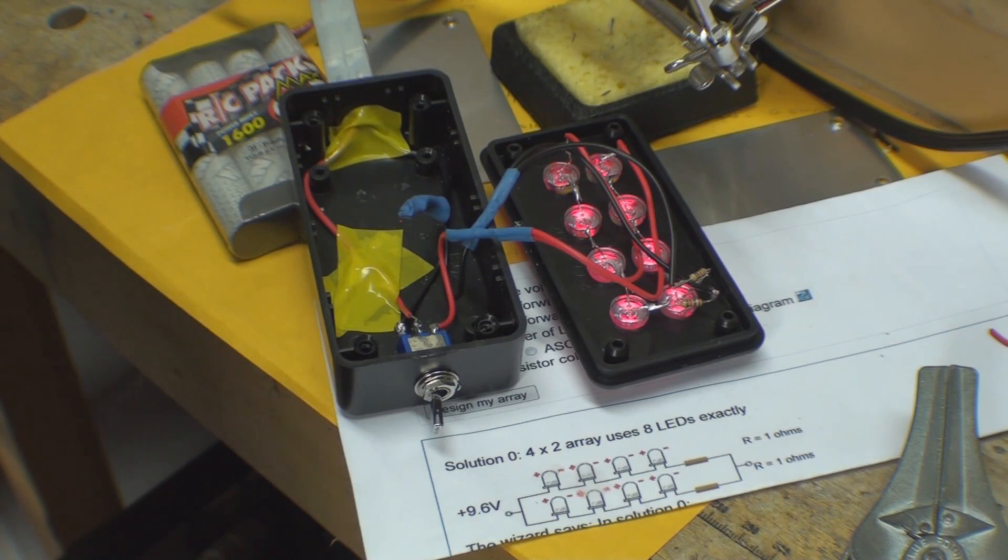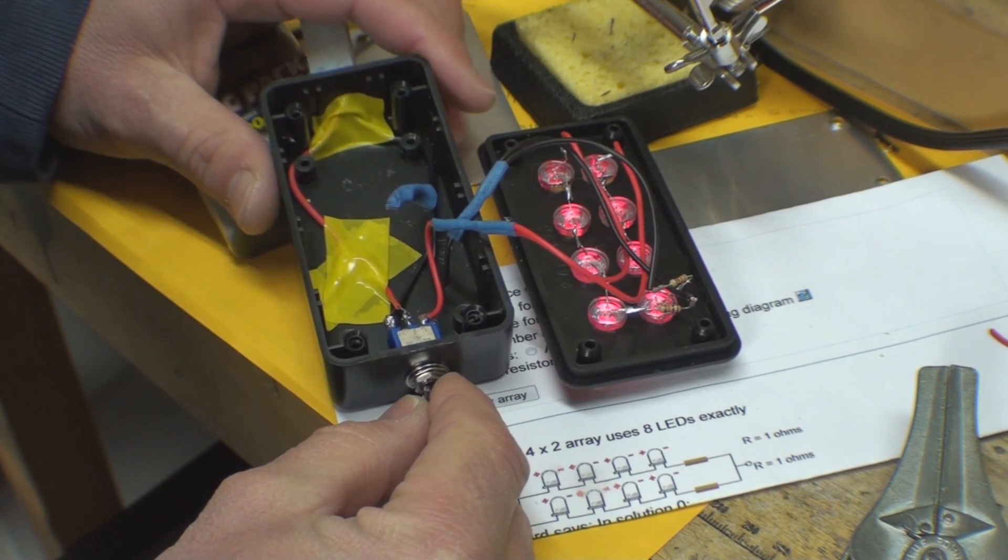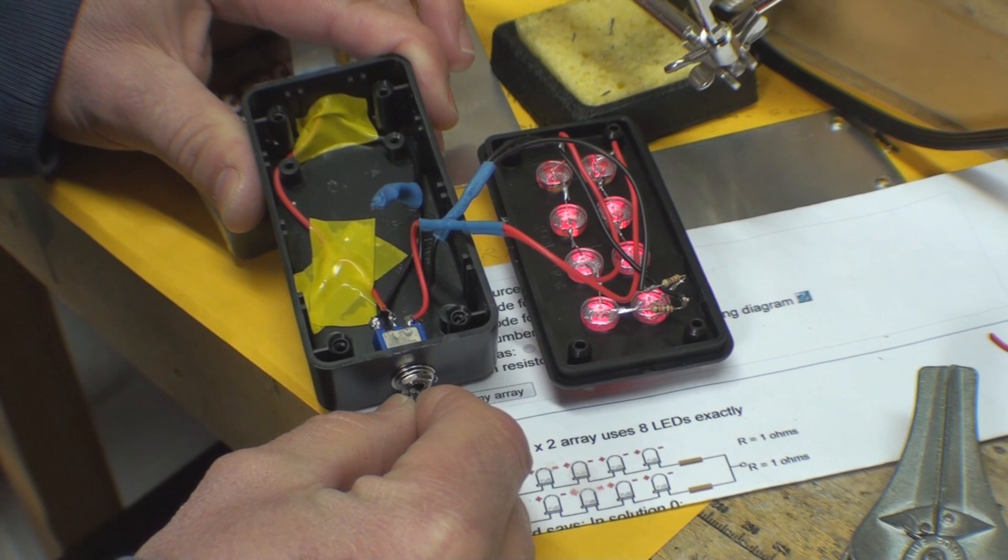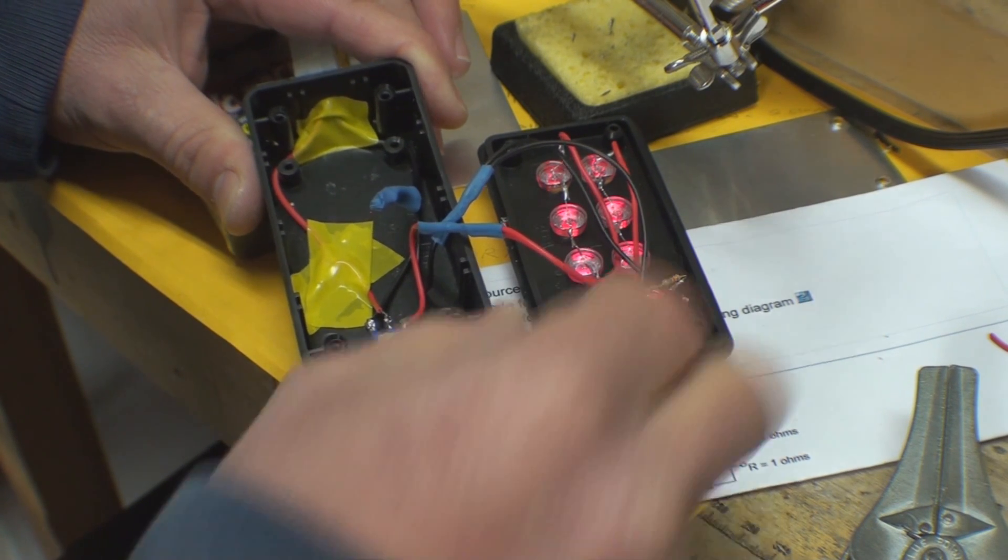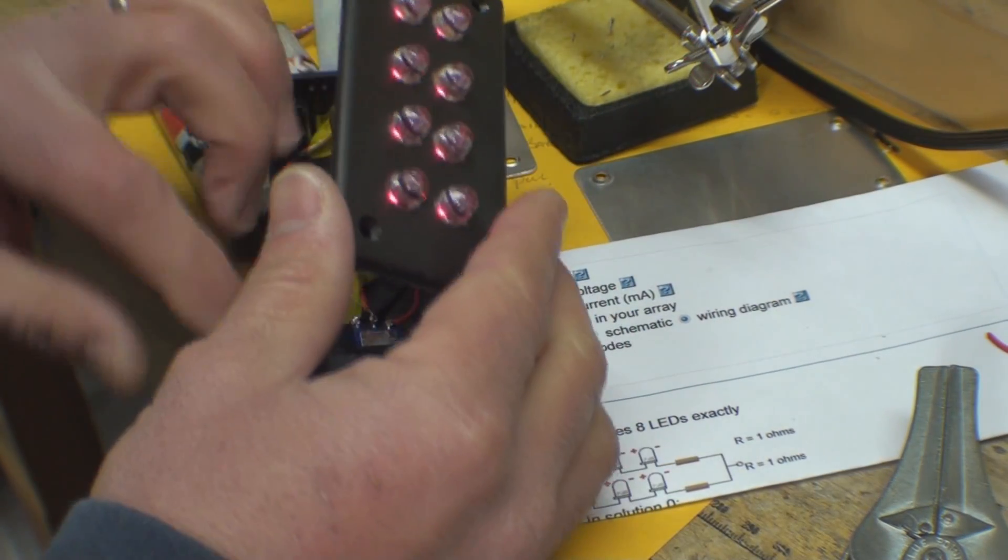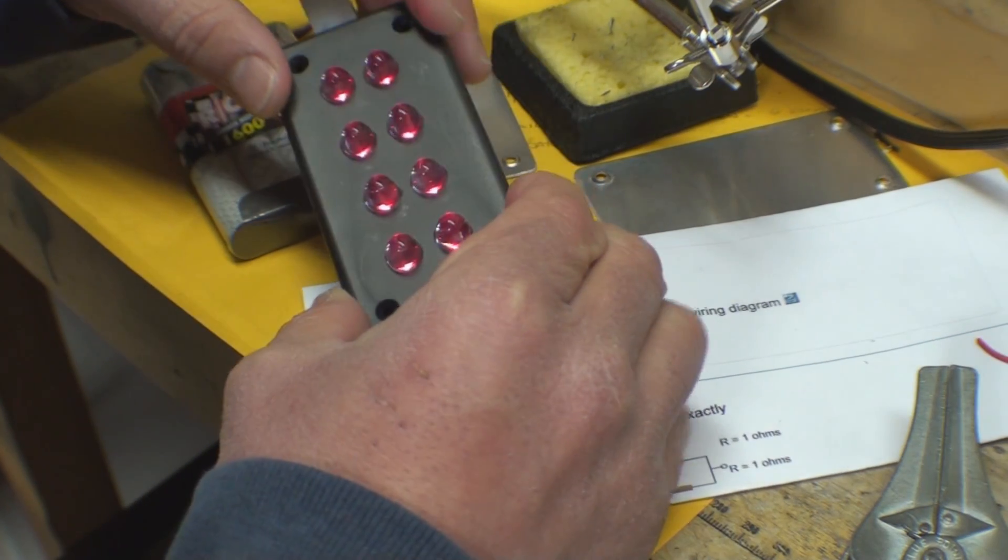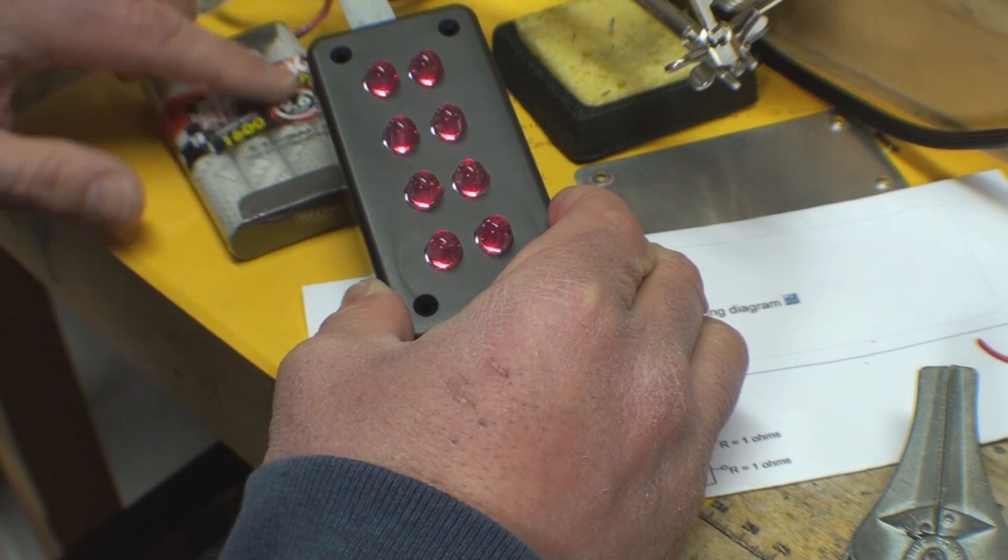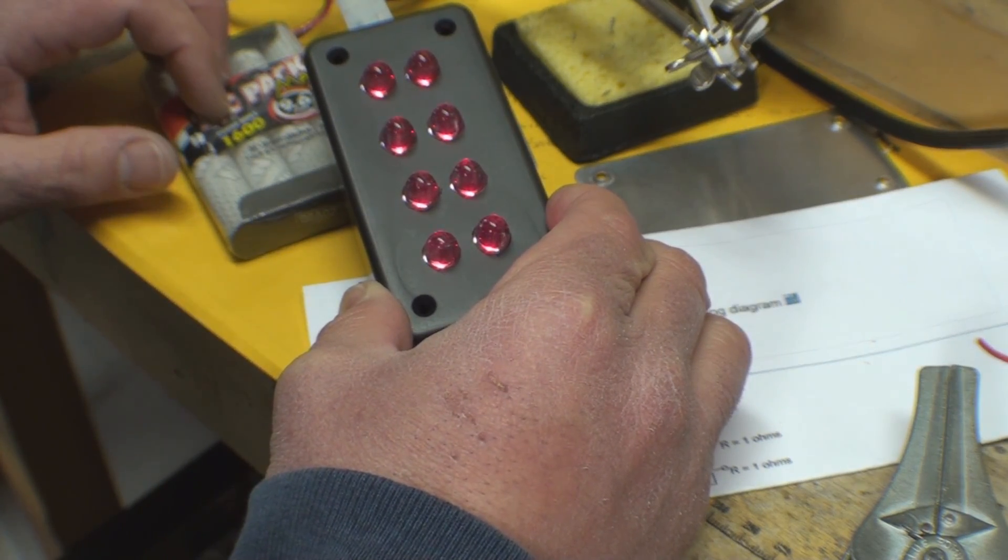So there you have it. You have the switch that's wired in, battery's connected, and everything seems to be working pretty well. So now all we have to do is button it up, put the screws back in it, put a little Velcro on the back of the battery so it keeps it in place and then attach it to the camera.